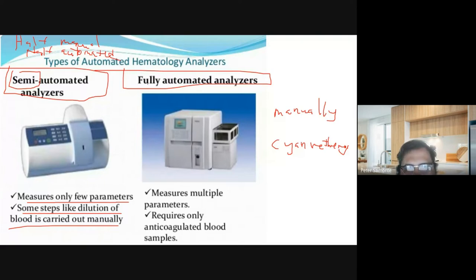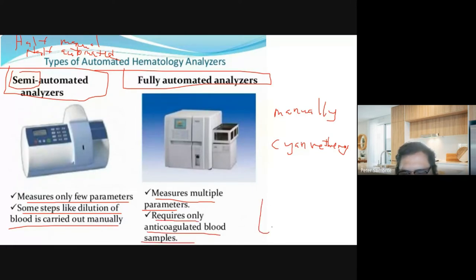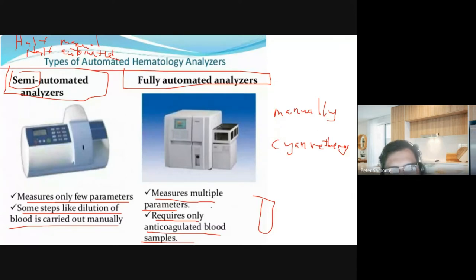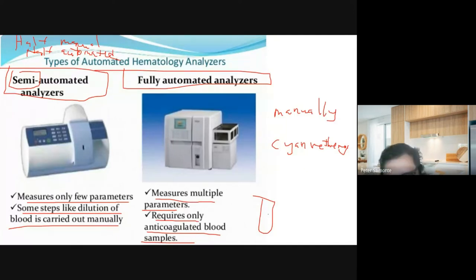The fully automated analyzer measures multiple parameters and requires only anticoagulated blood. You just need the blood — feed it into the machine and you don't need to do any manual labor. Feed it directly into the machine and the machine will do the rest.